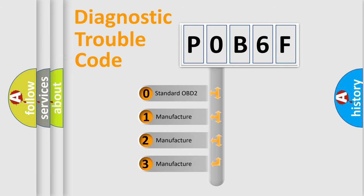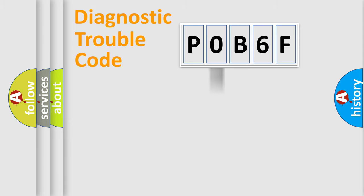If the second character is expressed as zero, it is a standardized error. In the case of numbers 1, 2, or 3, it is a more prestigious expression of the car-specific error.